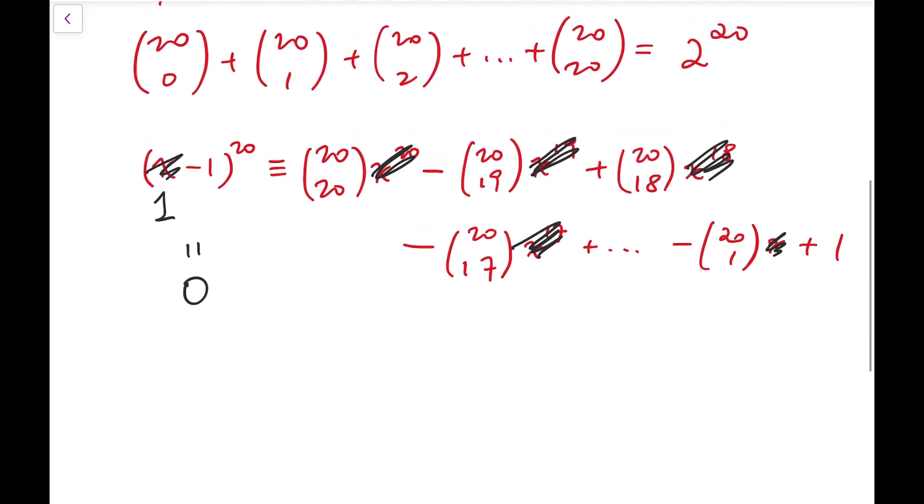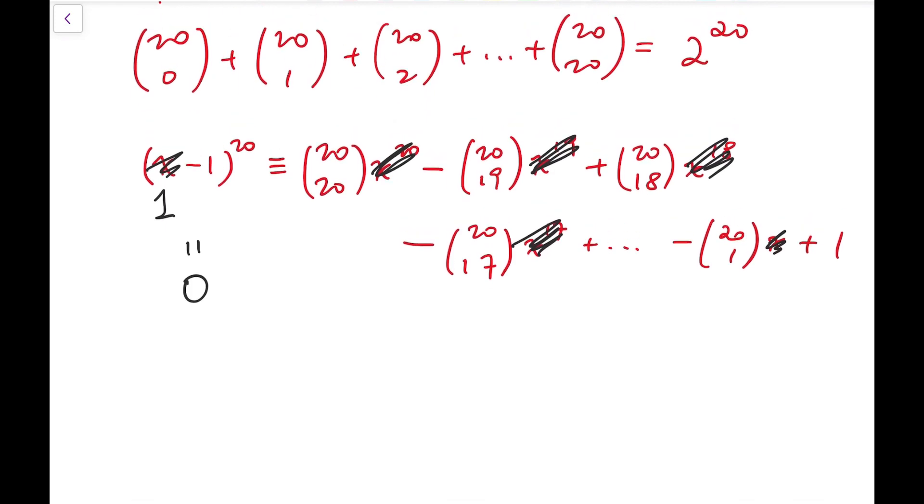Now to evaluate the sum we want, we can actually add the two results we've got. This one we're adding these terms while cancelling out all the terms of the form 20 choose odd numbers, while we have two copies of the sum of 20 choose even numbers. So two times our final answer...